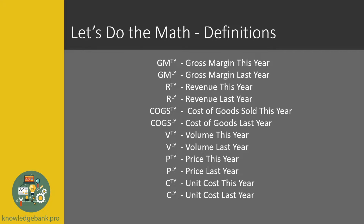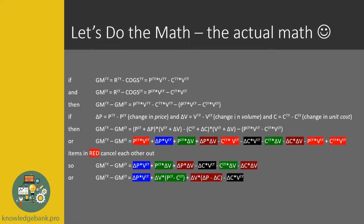In this slide I did all of the math. We're saying that gross margin is revenue minus COGS, then we break down revenue as price times volume minus unit cost times volume. We do the same for last year's gross margin, then calculate our variance as gross margin this year minus gross margin last year and work through the math. By the way, in the description of this video I will include a link to a blog post where you can copy and paste this math and follow it at your own pace.